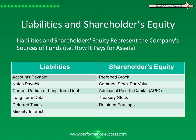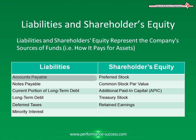Liabilities and Shareholders' Equity represent the company's sources of funds, such as how it pays for its assets. Liabilities represent what the company owes to others. They must be measurable, and their occurrence is probable.